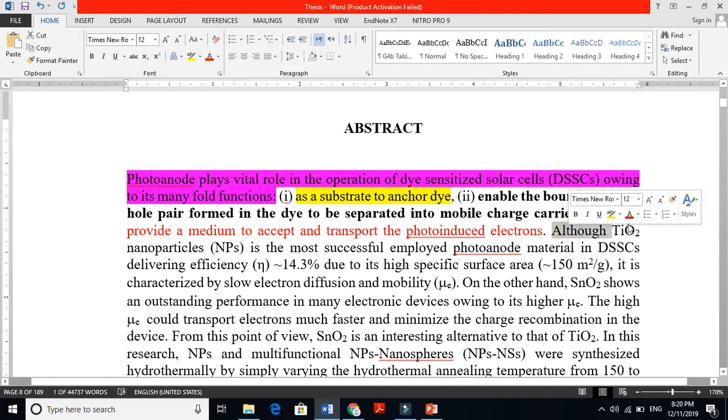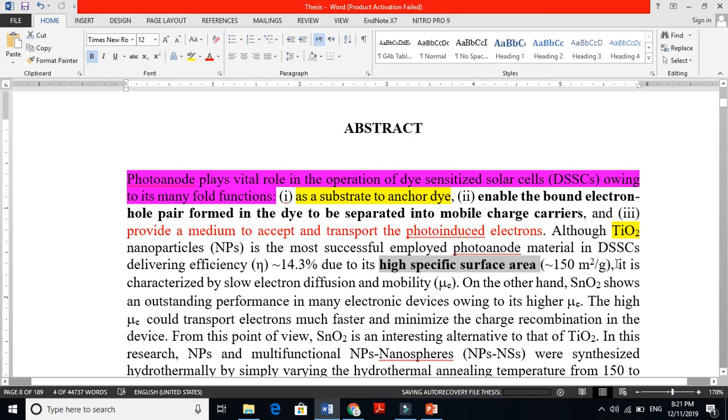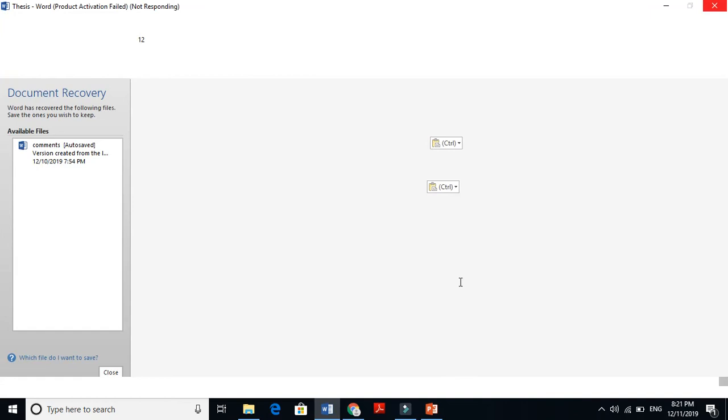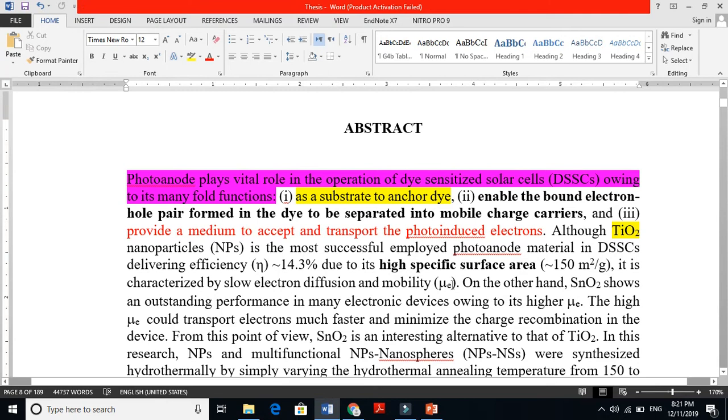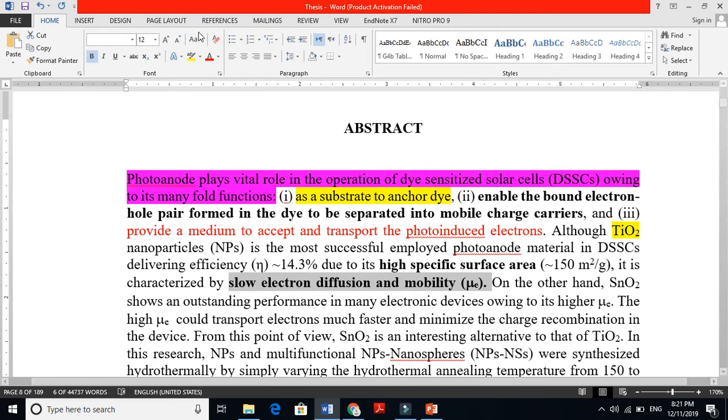First I tell the readers that photoanode plays very important role because of these properties. Now I am telling that although titania nanoparticles is the most successful employed photoanode material in dye-sensitized solar cell, delivering efficiency 14.3% due to its high specific surface area. Titania - I am telling these are the key features of titania. But I am telling that titania is characterized by slow electron diffusion and mobility. Titania has a problem. The problem is it has low electron mobility. This is the drawback.